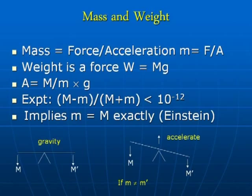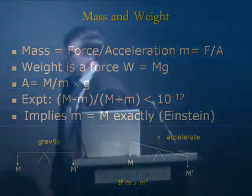There are two definitions you could adopt for mass. Following the spirit of Newton's second law — that if you apply a force to a body, then its mass m and the acceleration it experiences are related by force equals mass times acceleration. This type of mass, conventionally called inertial mass, you could define as being the ratio of the applied force to the object divided by the acceleration that results. Let's just call that little m.